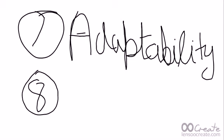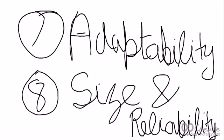The seventh advantage is adaptability. Digital signal processing systems are easily upgradable since they are software controlled, but such easy upgradation is not possible in analog systems. The eighth advantage is size and reliability — DSP systems are small in size, more reliable, and less expensive compared to analog systems.